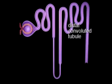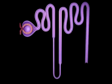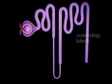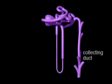Each renal tubule empties into a connecting tubule that leads to a collecting duct. Connecting tubules from many nephrons empty into each collecting duct.